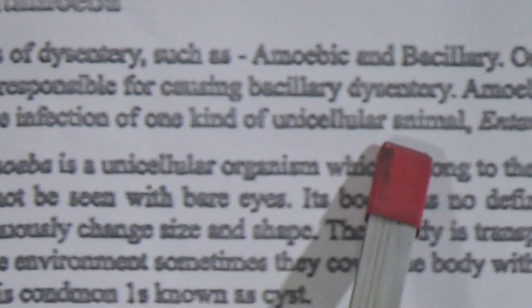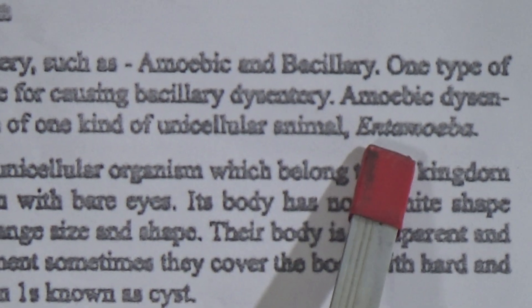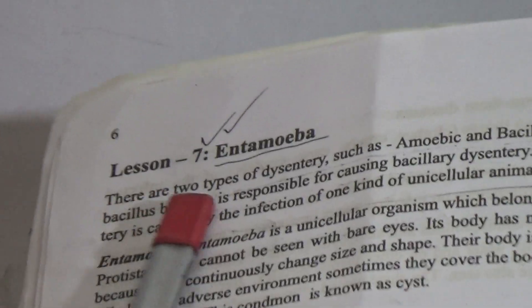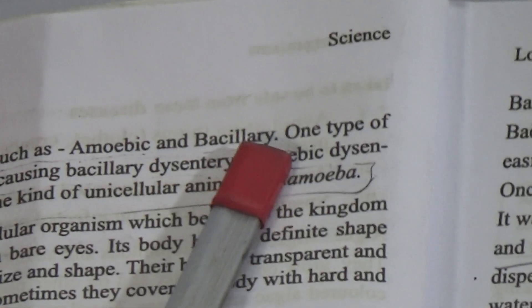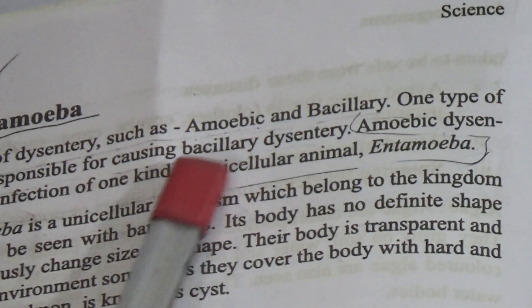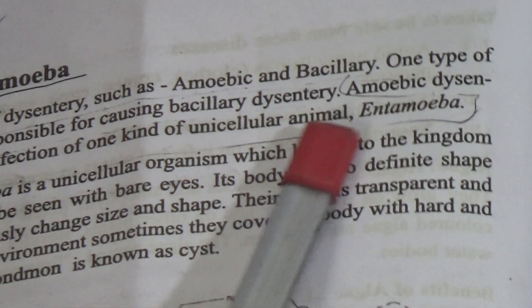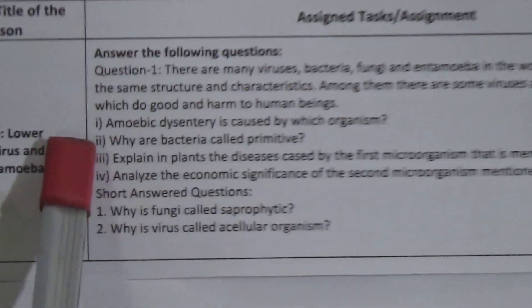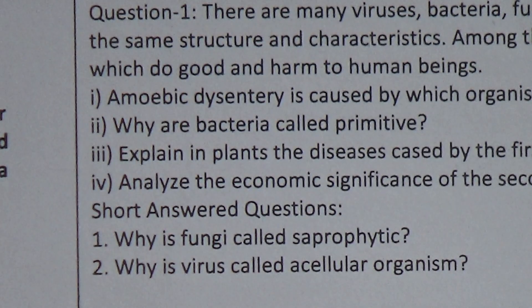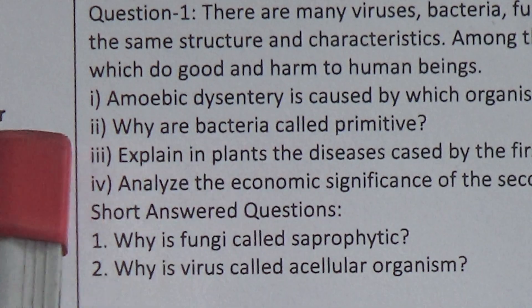There are two types of dysentery: amoebic and bacillary. One type of bacillus bacteria is responsible for causing bacillary dysentery. Amoebic dysentery is caused by the infection of one kind of unicellular animal — unicellular means one-celled — and this is called Entamoeba. So our answer is here. You can write from here and add more lines about amoebic dysentery to describe the answer further.